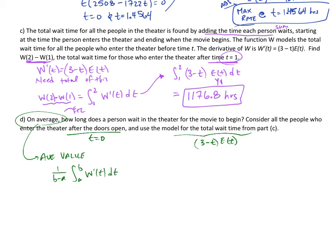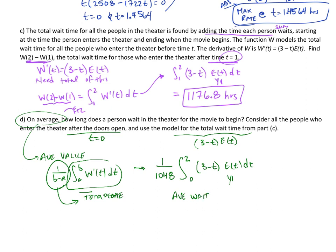What's a and b? We go from zero to two. I already know what the total people were from part A. We had 1048, that's the total people. So I have to take this and divide it by the total people over those bounds. We've got from zero to two, and we've got this W'(t), which is (3 - t) times E(t). Remember, I told you to put this as y1 in your calculators so you don't have to retype the equation over and over. I work this out and I get an average wait time of 1.7191 hours.